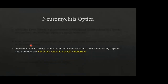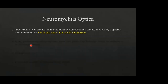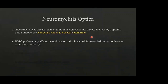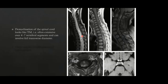Neuromyelitis optica, also called Devic's disease, is an autoimmune demyelinating disease induced by a specific autoantibody — the NMO IgG — which is a specific biomarker for the disease. It preferentially affects the optic nerves and the spinal cord, though lesions do not have to occur synchronously. It has a higher female preponderance with a ratio approaching 6:1, and the age of onset is higher at 41 years compared to 35 in MS. The disease has a severe course. Demyelination in the cord spans more than four to seven vertebral segments — a long segment myelopathy — and can involve the full transverse diameter, with cord expansion possible.